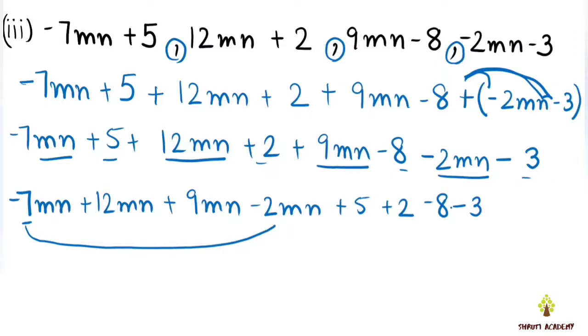Minus minus gives plus, so 7 plus 2 is 9MN. The other group is minus 9MN. Then we have plus 12MN and plus 9MN on the positive side.